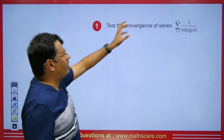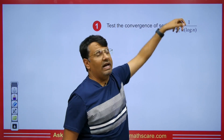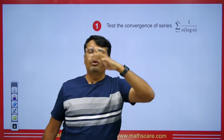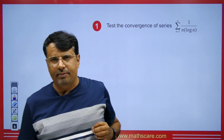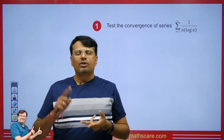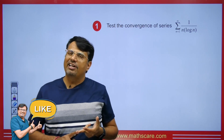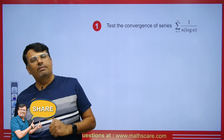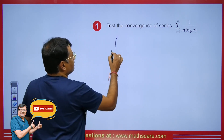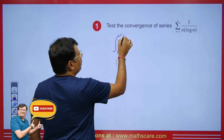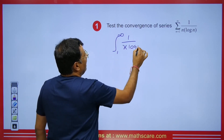We have to test the convergence of the series summation n=1 to infinity of 1/(n log n). Whenever we apply the Cauchy Integral Test, we have to check three things: the function is positive, monotonically decreasing, and integrable. If that's the case, then we get the integral from 1 to infinity of 1/(x log x) dx.